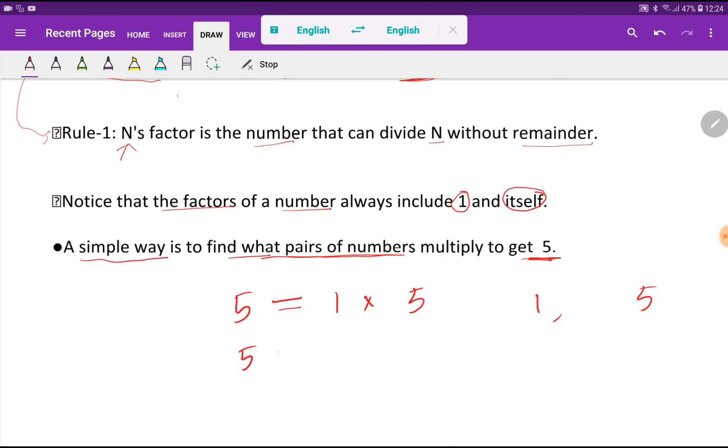Now we have to find the other factors of 5. After 1, I will take 2. So what number will come here? To find out, I will divide 5 by 2. I am getting 1 as a remainder. That is why we know that 5 is not completely divisible by 2. So 2 is not a factor of 5.